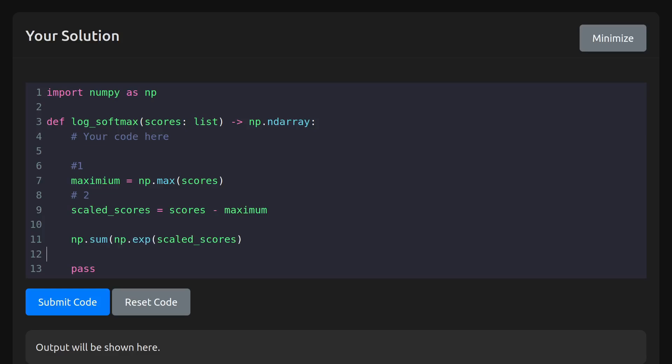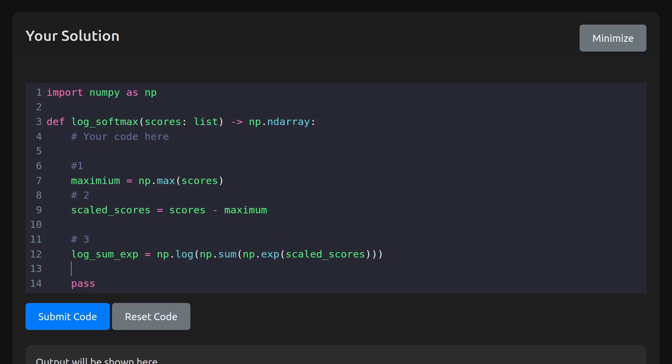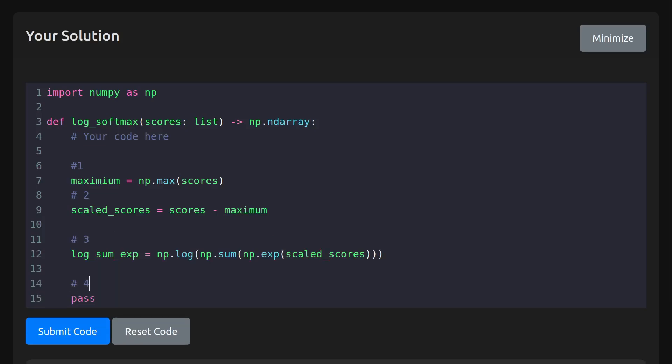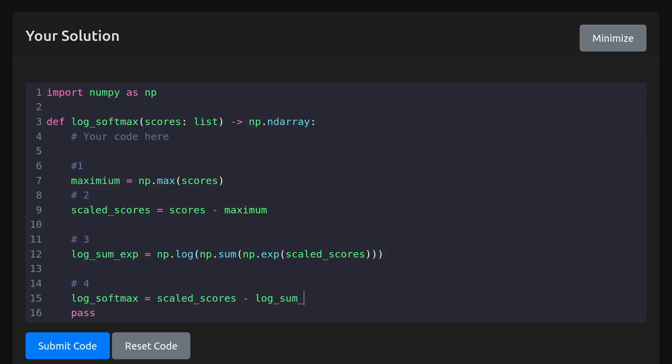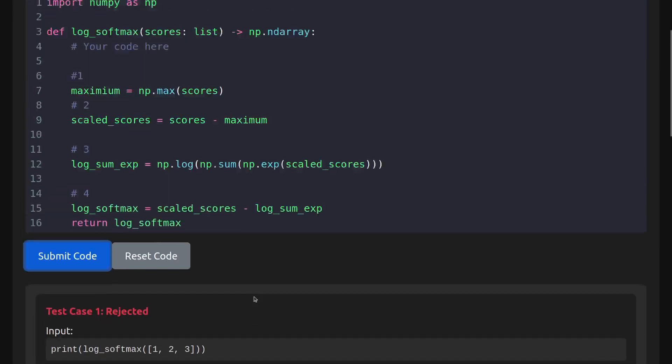And then if you remember, the formula is the np.exponent of the scaled_scores, and then on that we're doing the summation. And then on that we're taking the logarithm, and this is called our log_sum_exp. And lastly, what we're doing here is to get the log_softmax: we're doing the scaled_scores minus the log_sum_exp and return that.